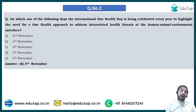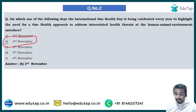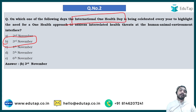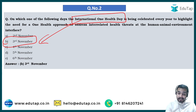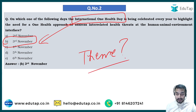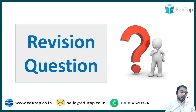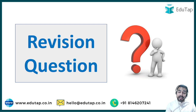The key takeaways from this article are: first, this is the sixth International One Health Day, and the date — 3rd November — is really very important. Second, the theme on which the stakeholder forum will be organized by the Department of Animal Husbandry and Dairying is 'Industry and One Health.' The right answer to this question is Option B, that is, 3rd November. There is also a homework for all of you: tell me in the comment section below what exactly the theme of International One Health Day is.